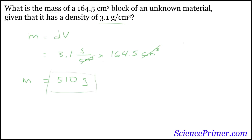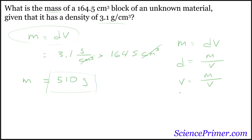To recap: in order to solve all the problems in this problem set, you need to manipulate the formula into any one of three formats. Mass equals density times volume; density equals mass over volume; and volume equals mass over density. As long as you can start with the core relationship and rearrange it to solve for any of the three variables, you'll do fine with these problem sets.